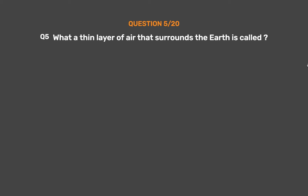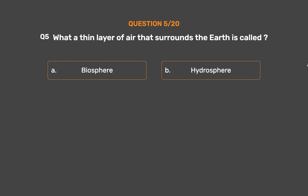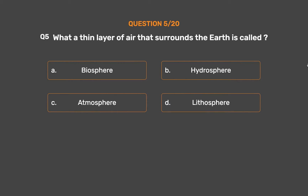Question No. 5. What is the thin layer of air that surrounds the earth called? Option A: Biosphere. Option B: Hydrosphere. Option C: Atmosphere. Option D: Lithosphere.